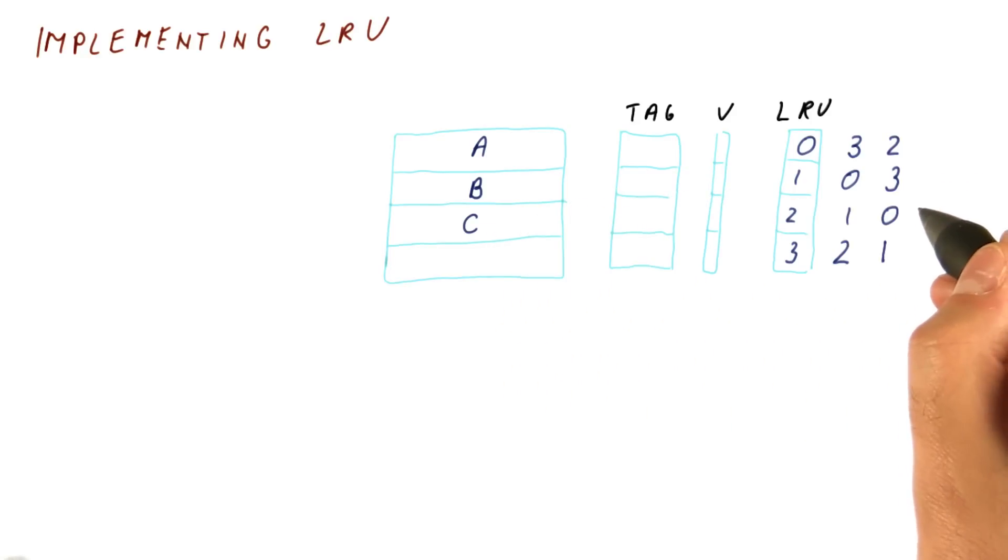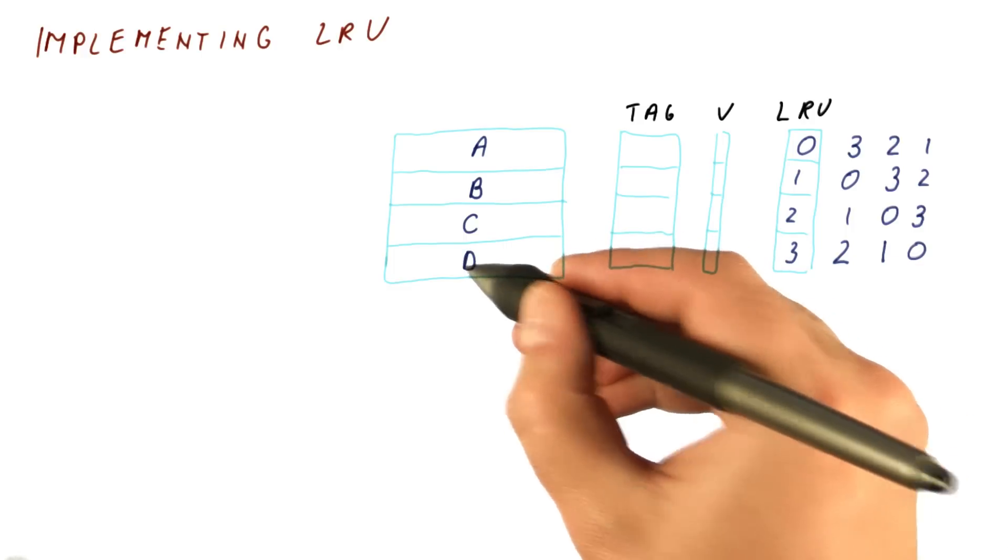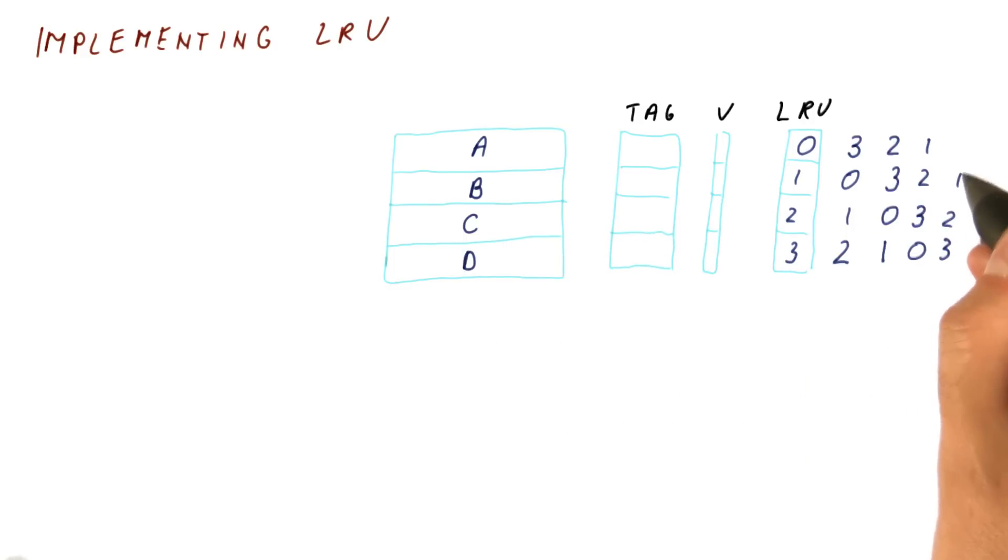We will now put some block C here. That becomes 3, this becomes 2, this becomes 1, this becomes 0. D: 3, 2, 1, 0. Now we're back to this situation.